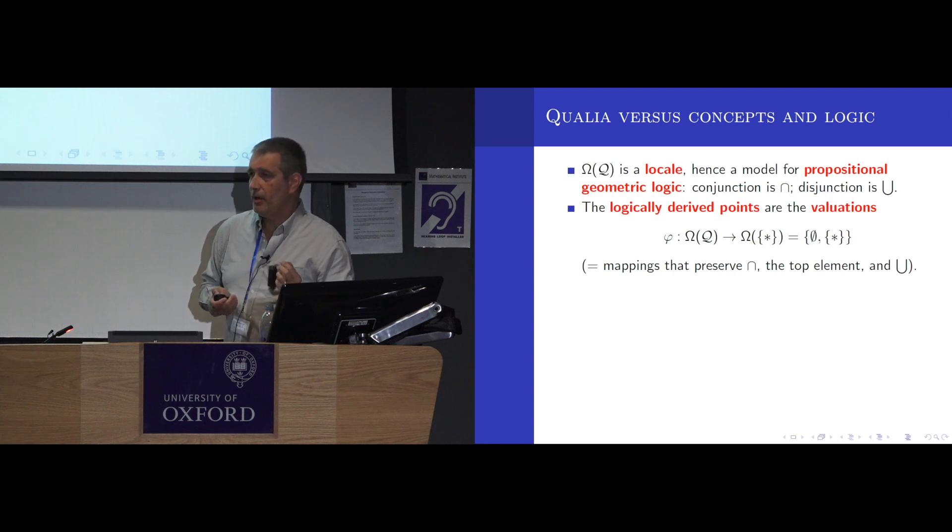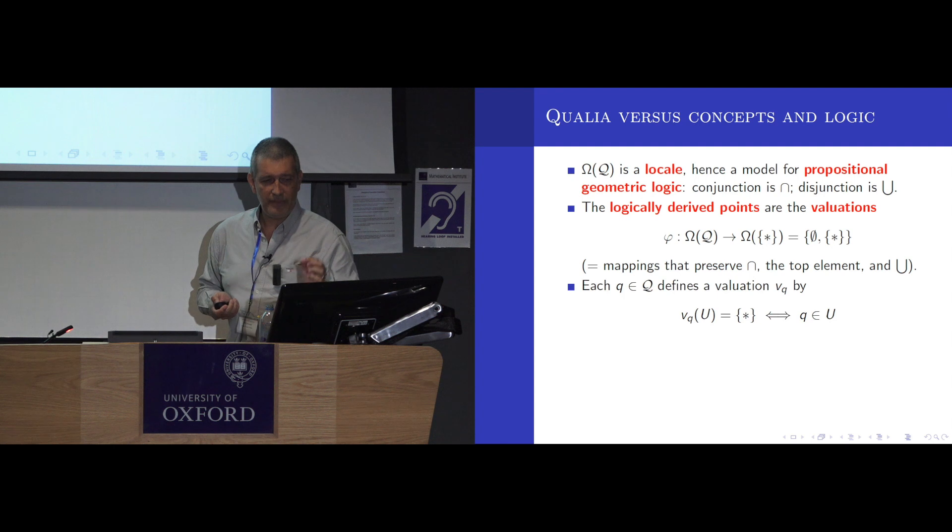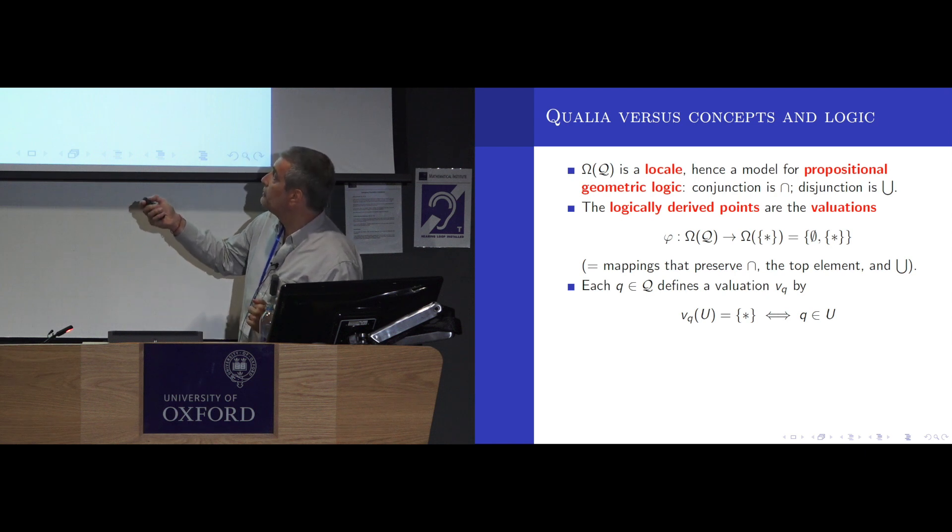Now, the basic models, elementary models of this logic are the valuations which map the topology into the topology of a singleton, which consists of two truth values. And they can be regarded as the logically derived points. According to the logic, these are the points that should exist. In fact, if you have each point, an actual point of Q, so a qualia, there will be a corresponding valuation that assigns to each concept the value true, precisely when it is true that the qualia belongs to the concept.